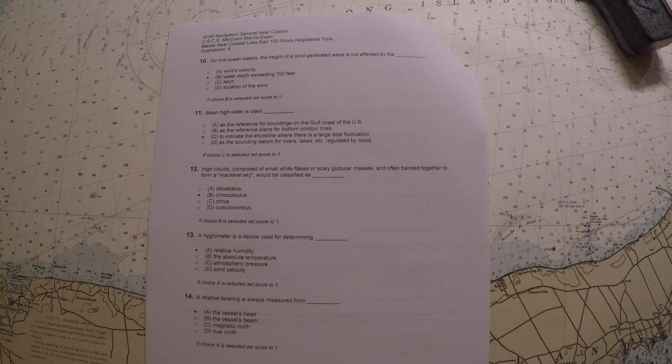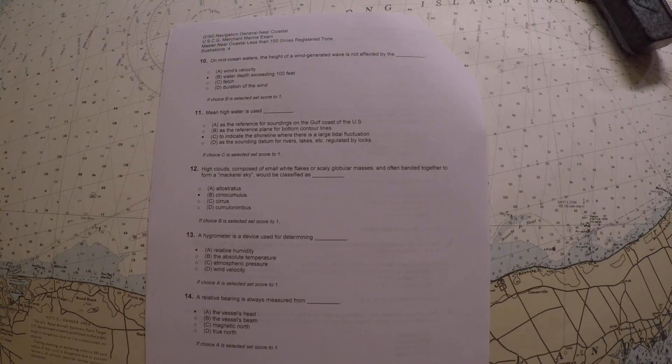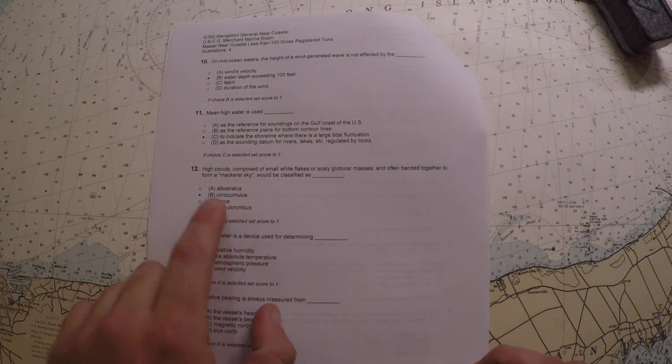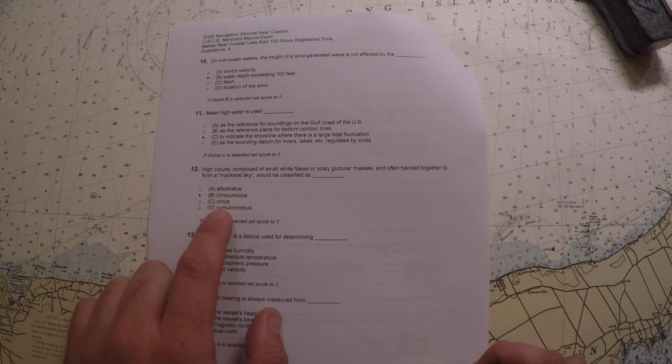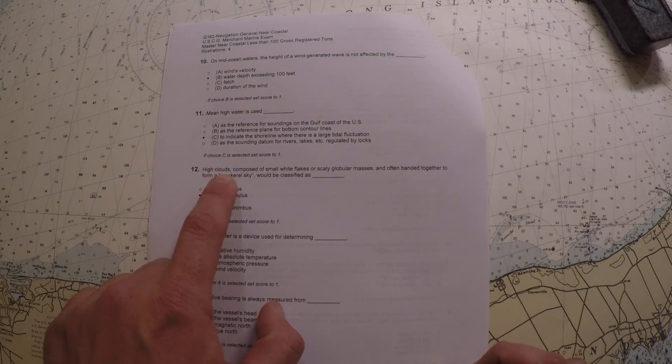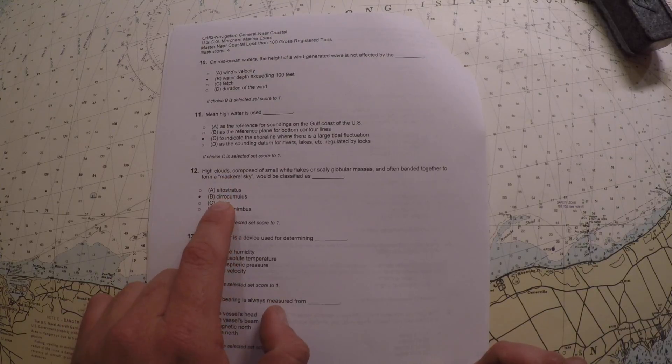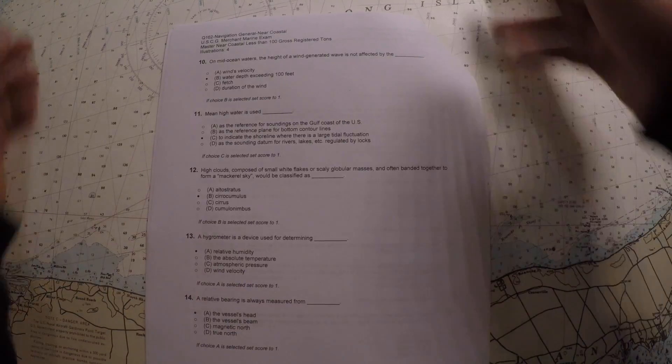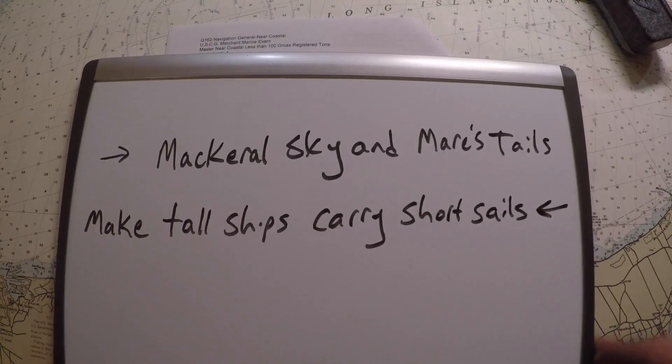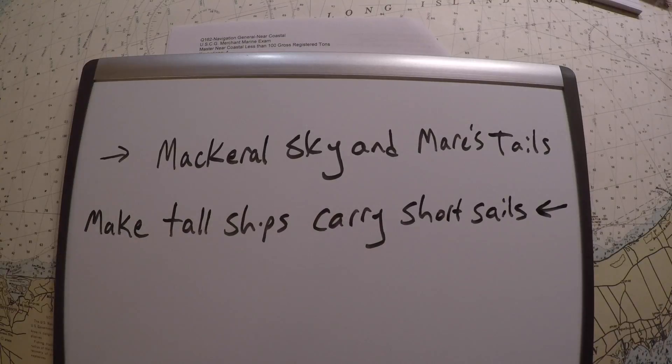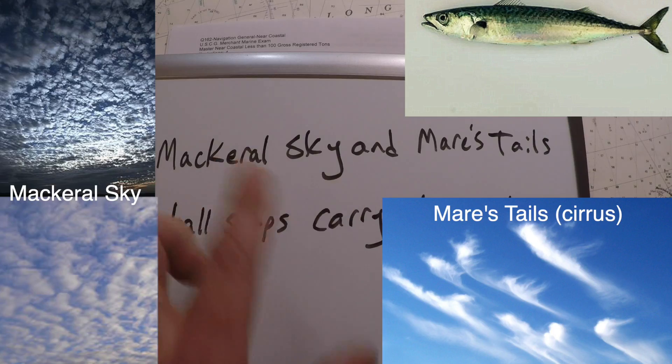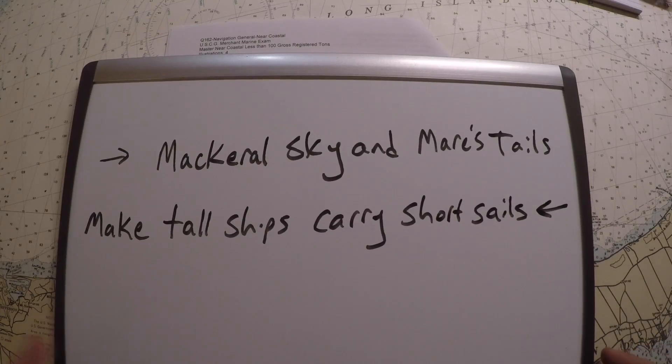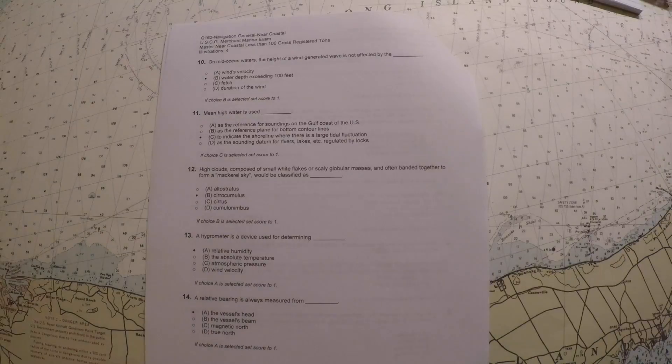For question number 12, it says high clouds composed of small white flakes or scaly globular masses are often banded together to form what's called a mackerel sky. It would be classified as what type of cloud. High clouds just in general means it's a cirro-type of cloud, so you can rule out answer A. But just an interesting tidbit: mackerel sky, there's one of those old sailor sayings which is mackerel sky and mare's tails make tall ships carry short sails. So mackerel sky is kind of an indicator of poor weather coming in a day or so.